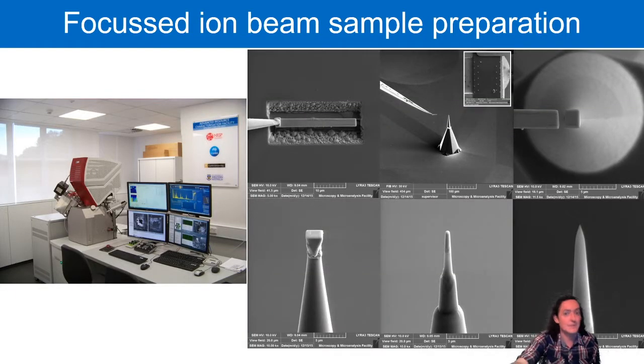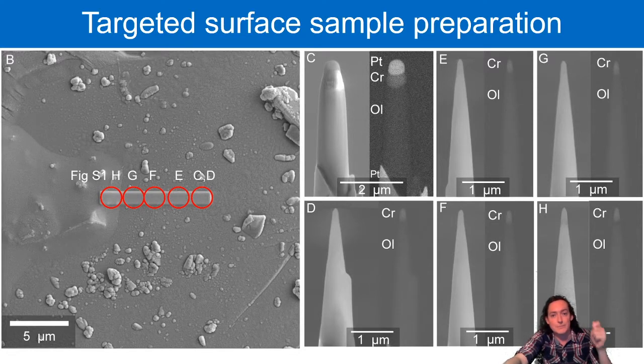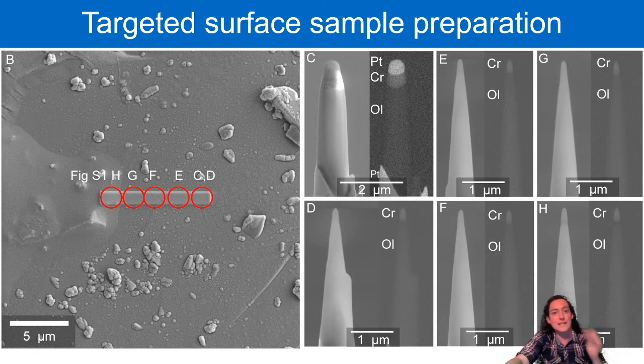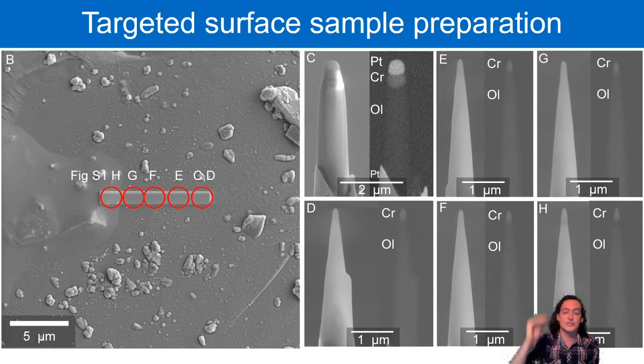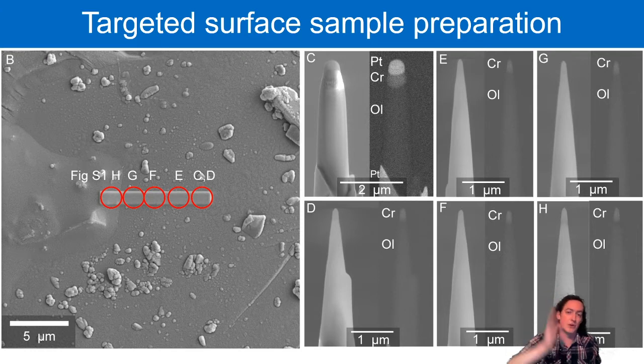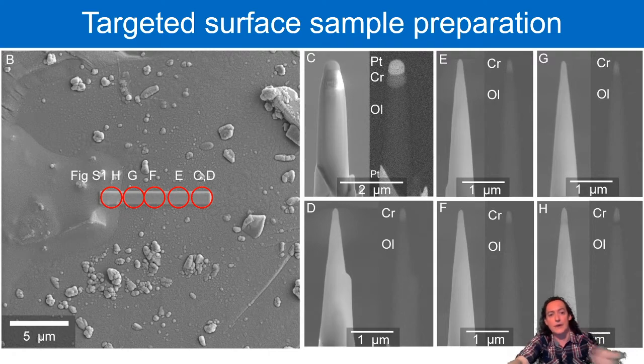To prepare a sample, you need a focused ion beam to mill out a triangular wedge, kind of like a Toblerone-shaped object. You attach a portion of that wedge to a pre-grown silica post, and then use an annular milling pattern to mill the sides of that wedge away until you are left with a needle that's 100 nanometers in diameter. Now we're interested in space weathering of these particles that have been brought back from sample return missions from asteroids. And so we're really interested in that surface. So we add an extra layer of protection to make sure we analyze that outer surface in the atom probe. And that's by using a protective capping layer of chromium.